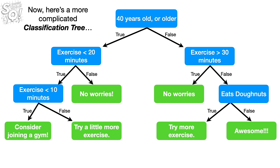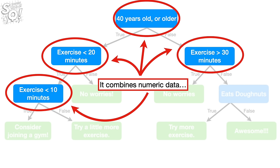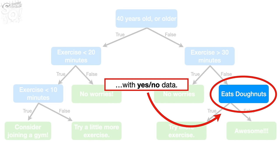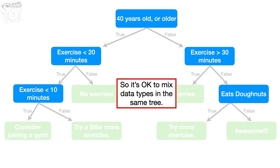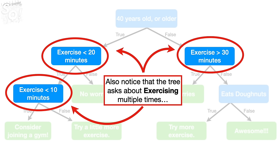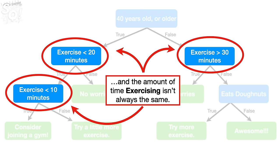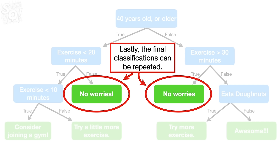Here's a more complicated classification tree. It combines numeric data with yes-no data, so it's okay to mix data types in the same tree. Also notice that the tree asks about exercising multiple times, and the amount of time exercising isn't always the same. So numeric thresholds can be different for the same data. Lastly, the final classifications can be repeated.